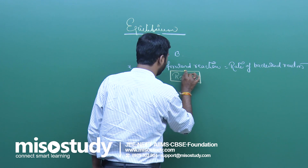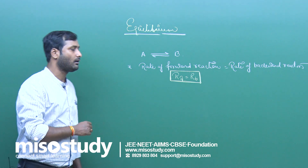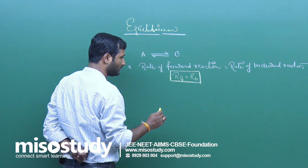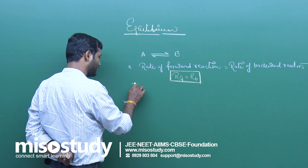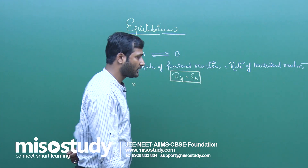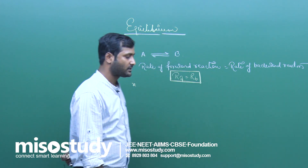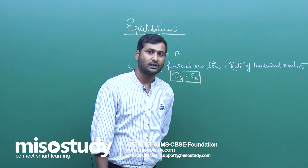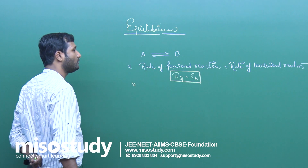The state, the condition, the situation where the concentration of reactant as well as product does not change with time — that state is called equilibrium state. It is the stage where all measurable properties like pressure, temperature, concentration, and colour do not change. This state is called equilibrium state.